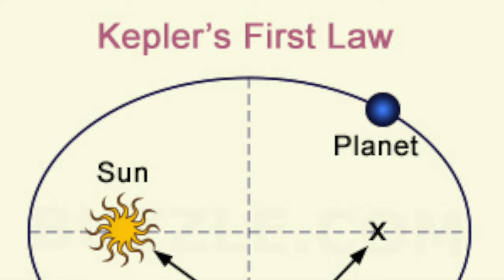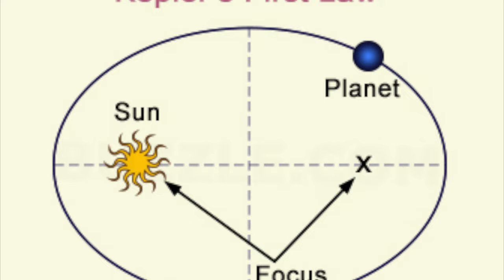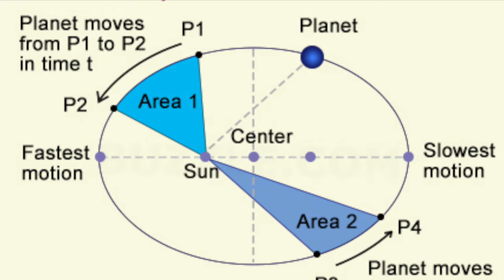These first two laws of planetary motion showed that the orbits of the planets around the sun were not circles — they were ellipses. Kepler also discovered the law of equal areas in the second law, where an imaginary line drawn from the sun to any planet sweeps out equal areas in equal amounts of time.